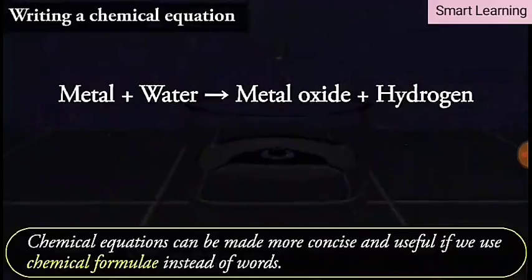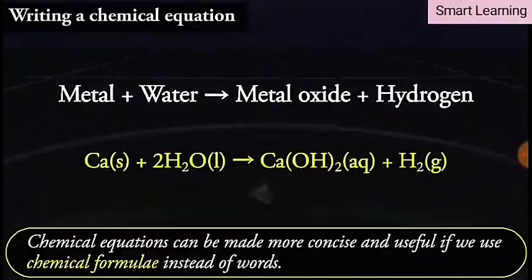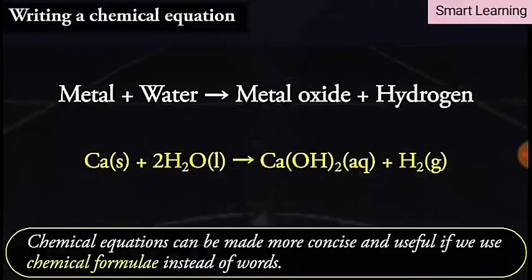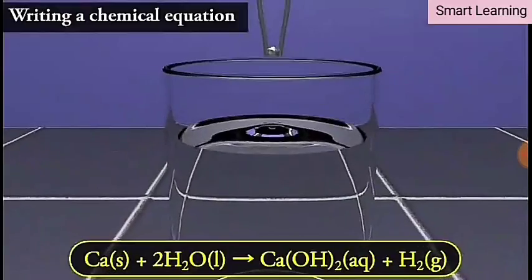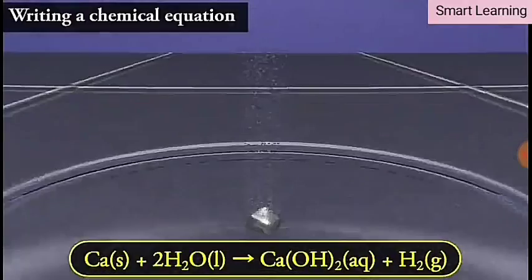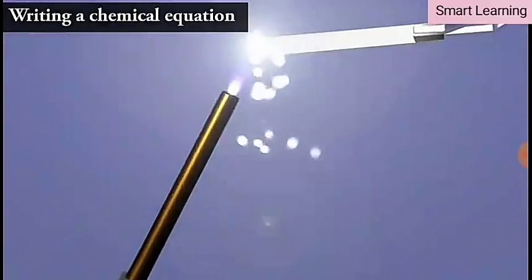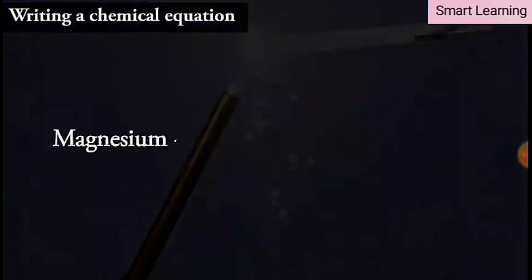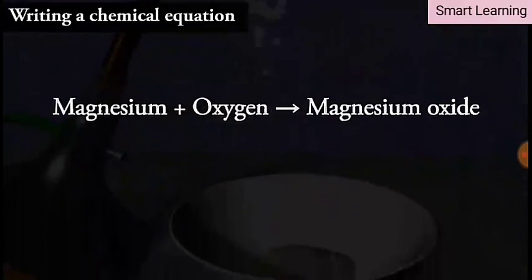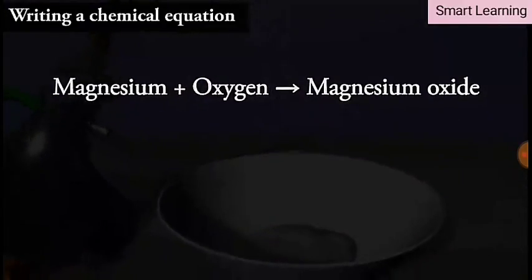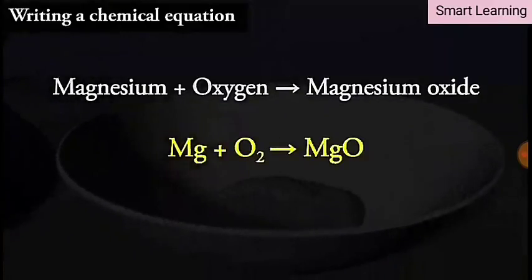Now let us learn about writing a chemical equation. Chemical equations can be made more concise and useful if we use chemical formulas instead of words. A chemical equation represents a chemical reaction. If you recall the formulas of magnesium, oxygen, and magnesium oxide, the equation can be written as: Mg + O2 → MgO.